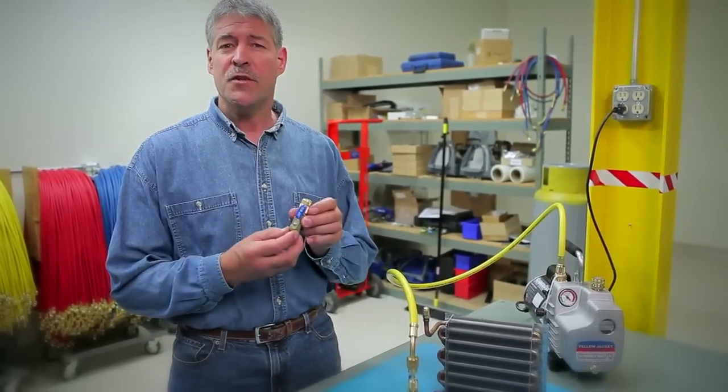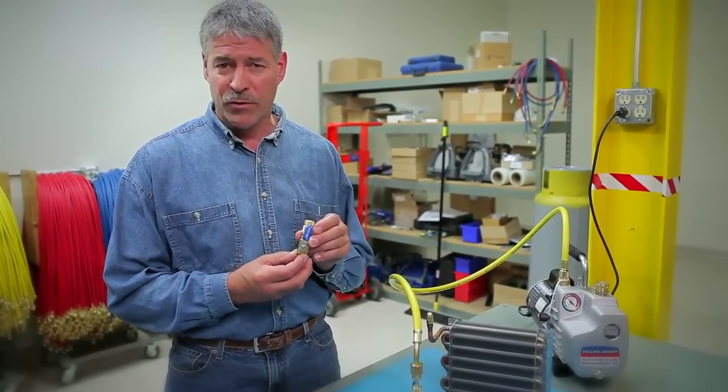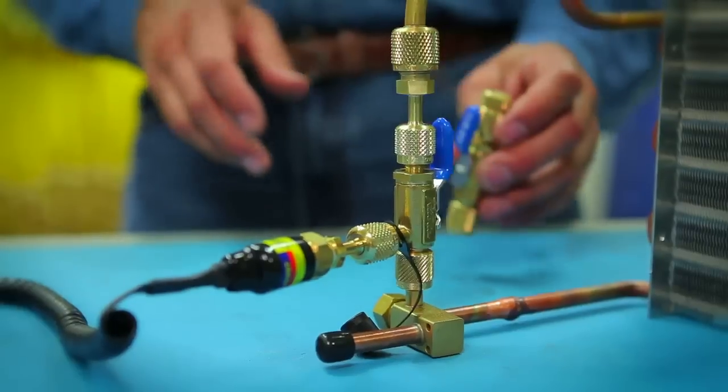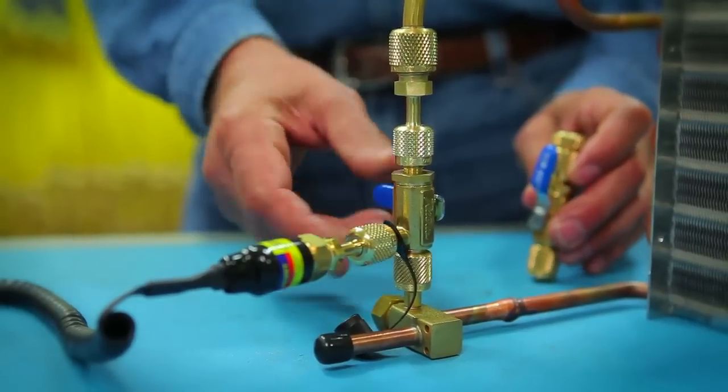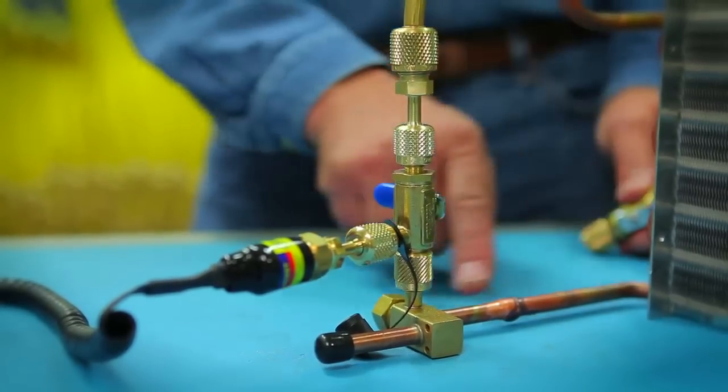One solution is to use a 4-in-1 core removal tool. This tool lets you completely isolate the charging hoses by giving you the ability to valve them off and measure the vacuum of the system only.